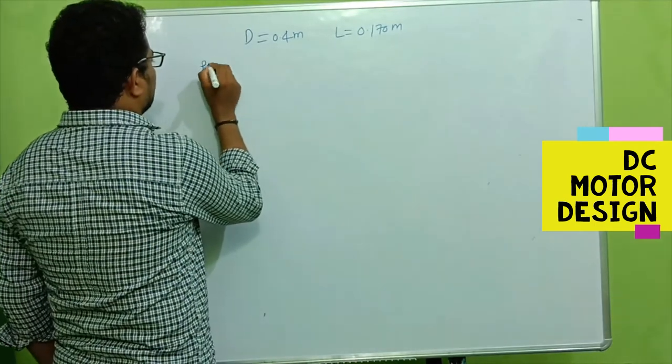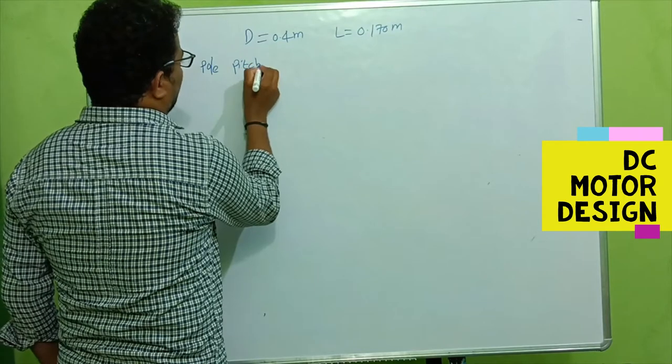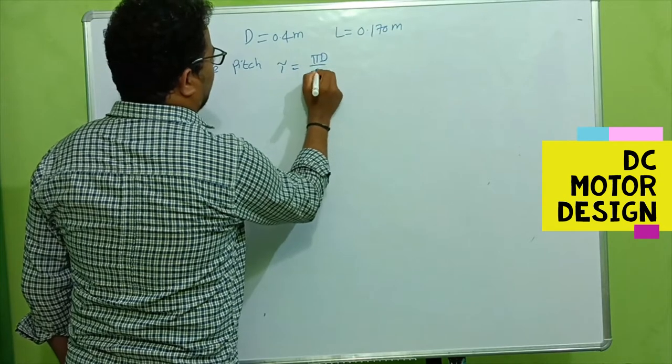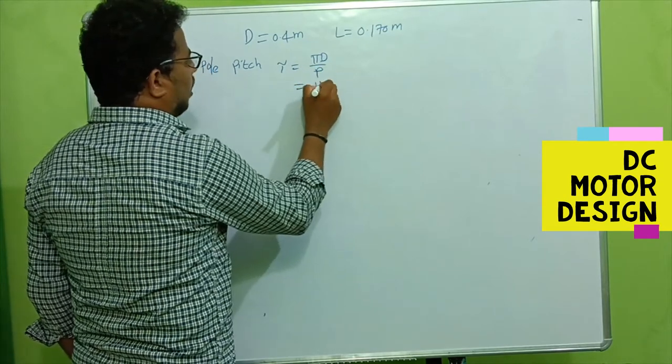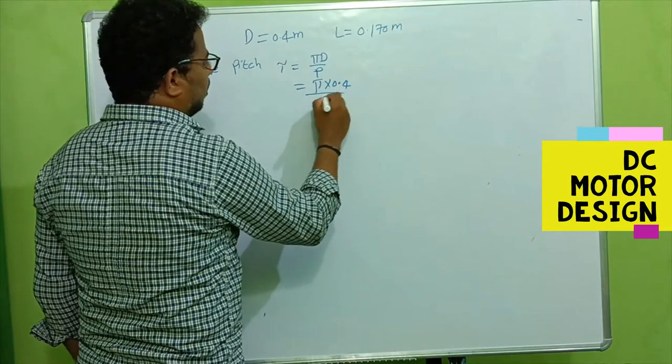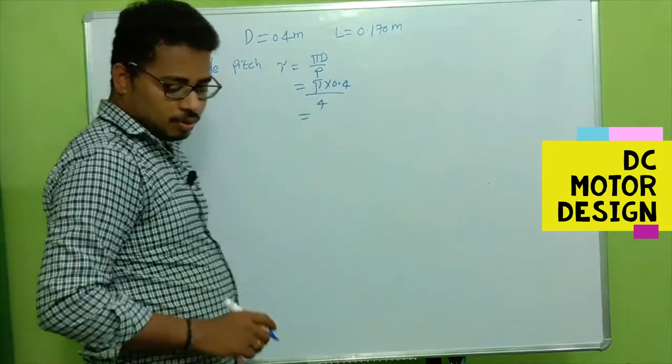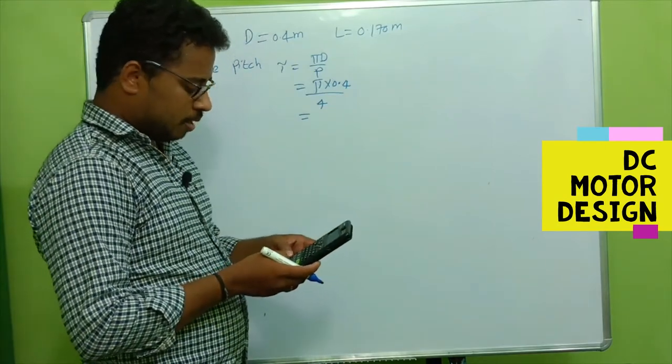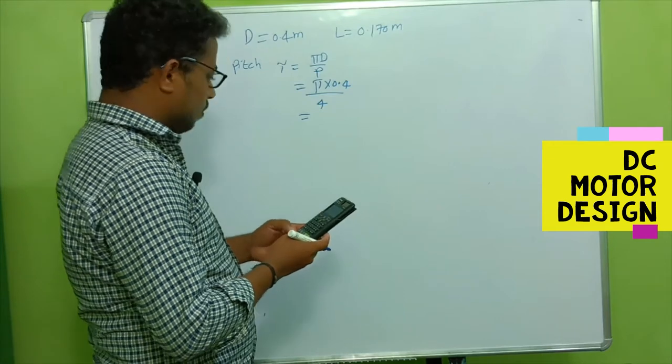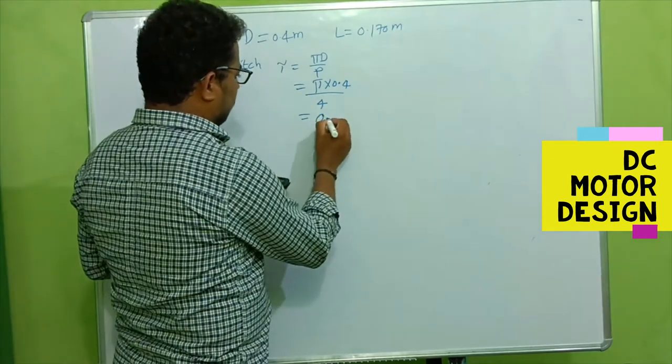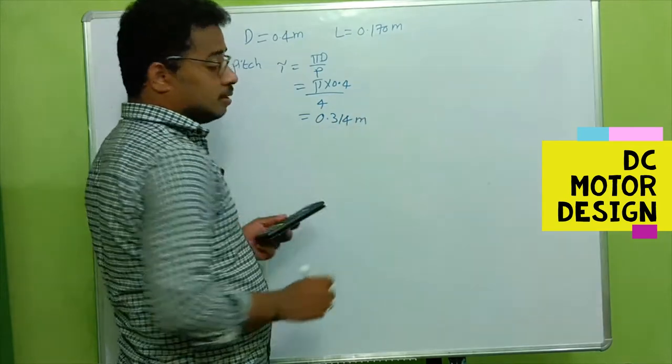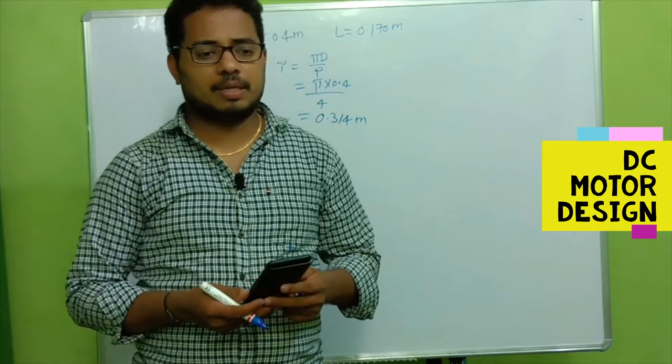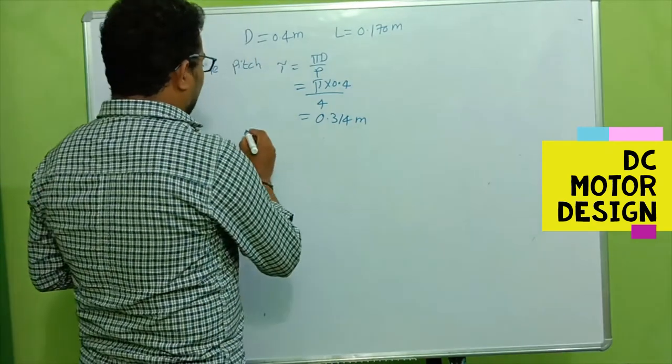First, let's calculate the pole pitch. Pole pitch is the pole center to center distance, denoted as τ (tau). That's π times D divided by number of poles. We have π times 0.4 diameter divided by 4 poles, which gives us π times 0.4 by 4, so we get 0.314 meters. So 0.314 meters is the pole pitch for us.